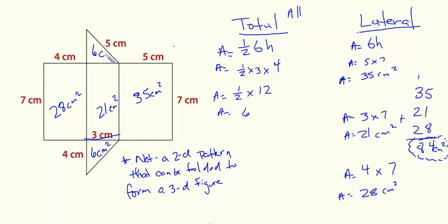And I have two of them. So basically I have six centimeters squared, six centimeters squared, so that's 12 that I need to add on to my 84 centimeters.